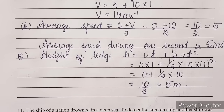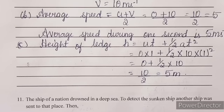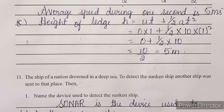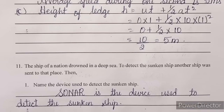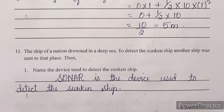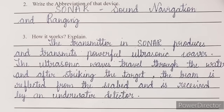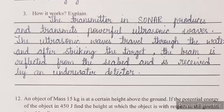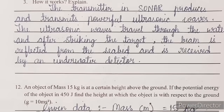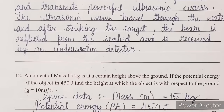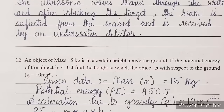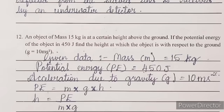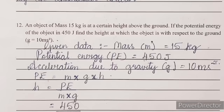Next, question number 11: the ship of a nation drowned in a deep sea; to detect the sunken ship, another ship was sent to that place. Name the device used to detect the sunken ship — answer: SONAR. SONAR stands for Sound Navigation And Ranging. How it works: the transmitter in SONAR produces and transmits powerful ultrasonic waves. The ultrasonic waves travel through the water and, after striking the target, the beam is reflected from the seabed and received by an underwater detector.